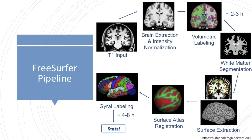Just to generate the volumetric labeling of the subcortical structures only takes up to two to three hours. And a full brain parcellation, which also includes the gyro labels, will need nearly double the time, so up to four to eight hours. The idea behind FastSurfer is to use deep learning tools to speed up this process and get a full FreeSurfer output in a fraction of the time.